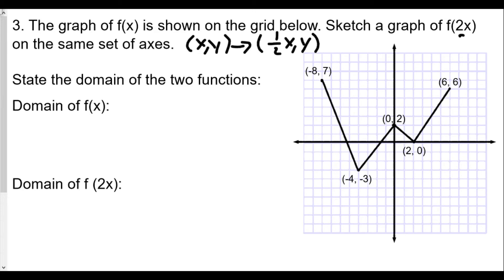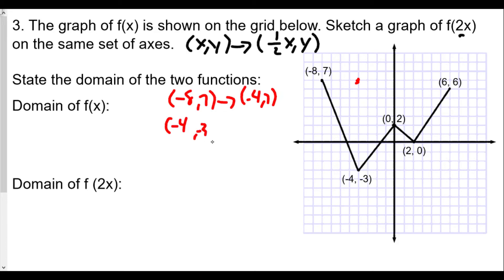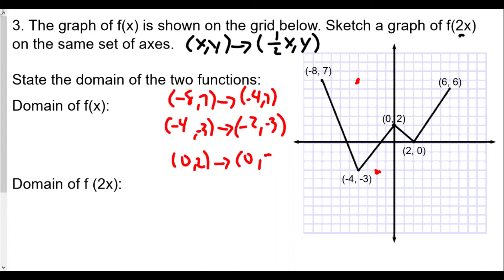Looking at each coordinate: negative 8 comma 7 becomes negative 4 comma 7. Negative 4 comma negative 3 becomes negative 2 comma negative 3 — we multiply the x value by one half and keep the y value the same. The coordinate zero comma 2 becomes zero comma 2, since one half times zero is still zero. And two comma zero becomes one comma zero, since one half of two is one.